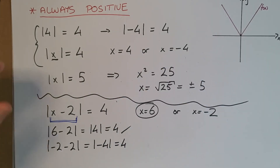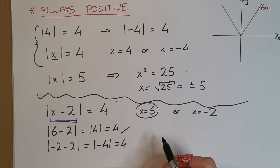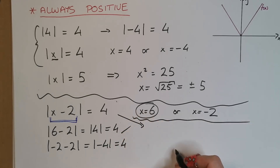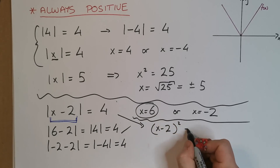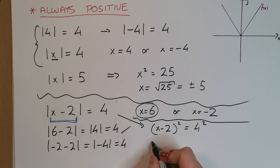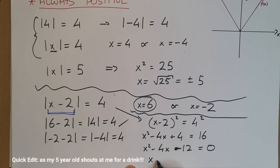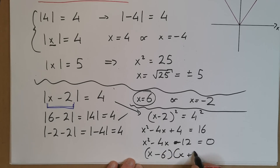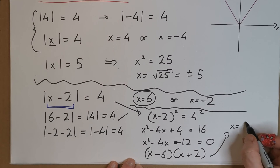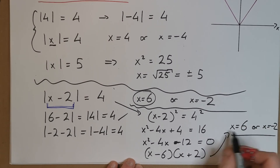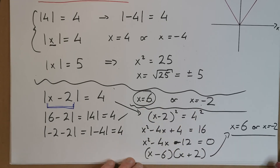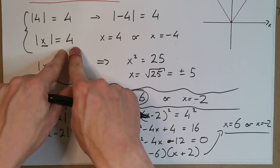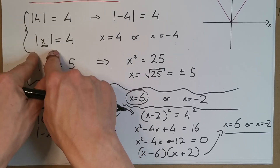We could also apply the squaring method here. Squaring both sides gives X minus 2 all squared equals 16. Expanding and rearranging as a quadratic, we can factorize to get X minus 6 times X plus 2, giving solutions X equals 6 or X equals minus 2 — the same answers we found by inspection. So when we use modulus brackets, the contents can be positive 4 or negative 4, and we still get out a positive 4.